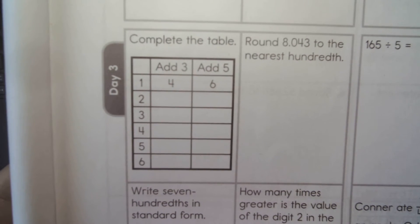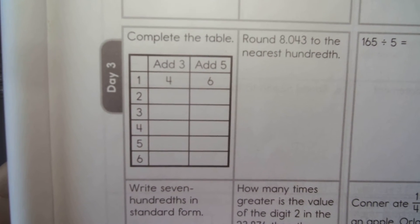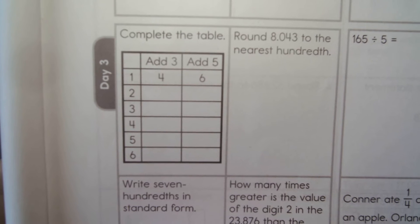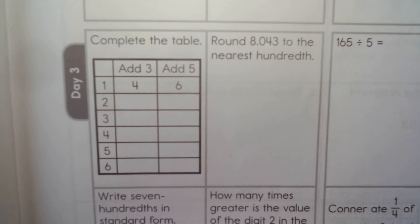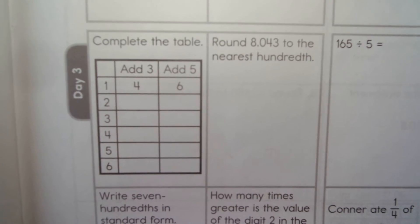When we add 5, 1 plus 5 is 6, so 2 plus 5 is 7, and then 8, 9, 10, 11. The next problem is round 8 and 43 thousandths to the nearest hundredth.